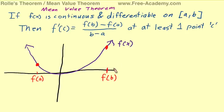We're going to start with the Mean Value Theorem first, because Rolle's Theorem, at least in my opinion, is just a special case of the Mean Value Theorem. The Mean Value Theorem states that if f(x) is continuous and differentiable on a certain interval from a to b, then there is at least one point c where f'(c) equals f(b) minus f(a) over b minus a.